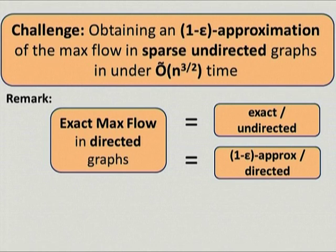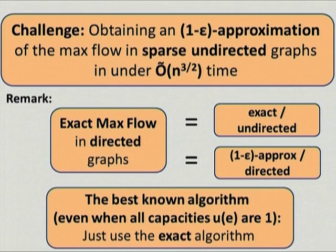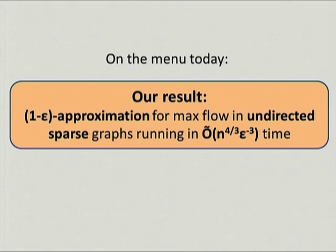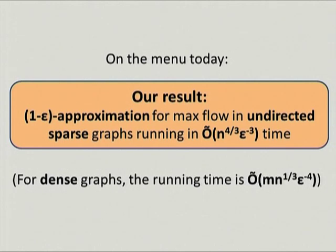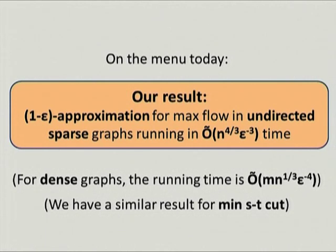This is hopefully a simpler challenge, but even for it, the best known algorithm until now—even when all capacities are equal to one—was just to use the exact algorithm. It was not clear how to take advantage of these relaxed assumptions. The result I want to discuss today is the first progress on this front: we show that you can obtain a 1 minus epsilon approximation for maximum flow in undirected graphs, and the running time is roughly n to the 4/3. For dense graphs, it's m times n to the 1/3. We also have a similar result for the minimum ST-cut problem.